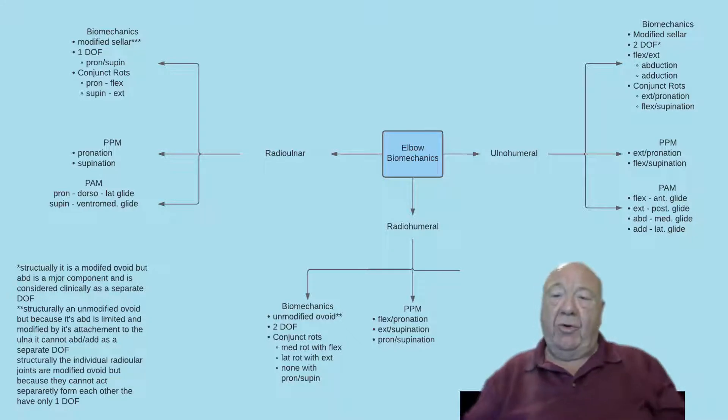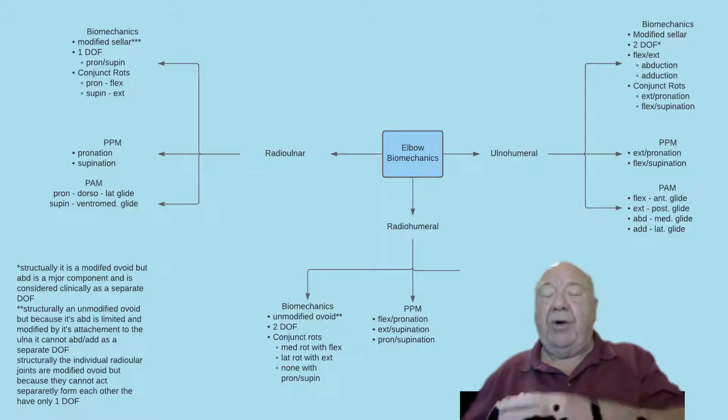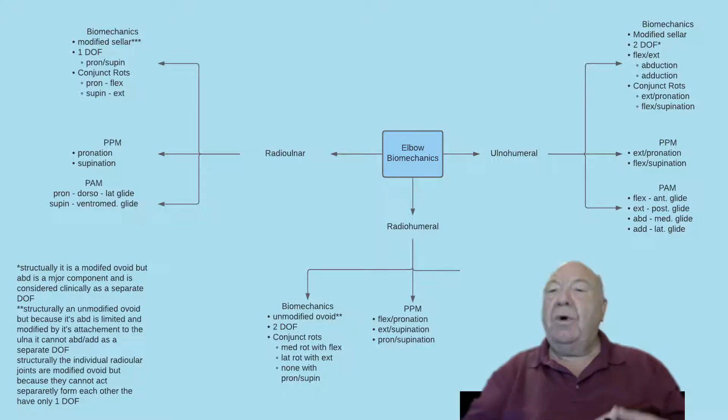The reason for this is that the ulnar humeral joint has a different conjunct rotation to the radio humeral joint. They're completely opposite direction. So if I gain full flexion, for example, of the ulnar humeral joint, I cannot at the same time get full flexion of the radio humeral joint. So these joints have to be assessed separately.